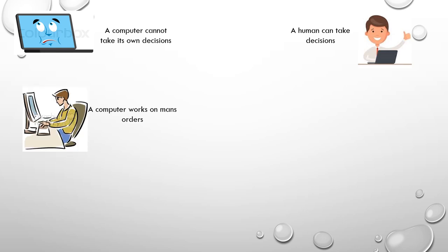A computer works on man's orders. The computer will work only when we give an order to the computer to work. If we press A, then only it will type A on the screen. If we are not pressing any key, the computer cannot type on its own.